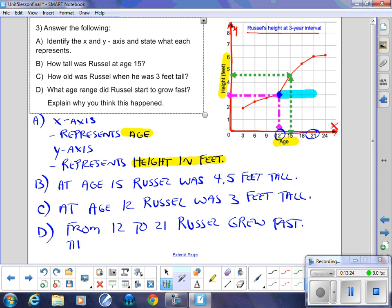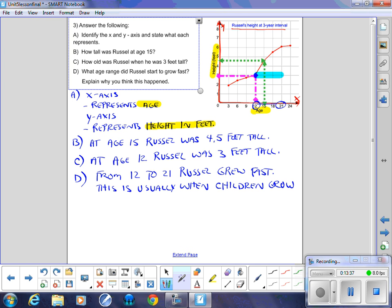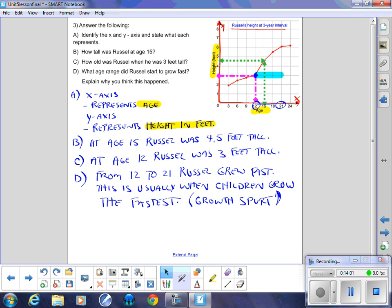Now why would a boy grow really fast from 12 to 21? Well, this is usually when children grow the fastest. Children grow the fastest. So it's called a growth spurt. You go through a growth spurt. I've seen it before. I don't even know if that's spelled right. It doesn't really matter, does it? I shouldn't say that. For me it doesn't matter. So a growth spurt.